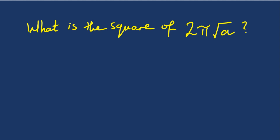Hello, so let's look at how to solve this particular question: What is the square of 2π√a? Okay, this is 2π times the square root of a, which means 2 times π times the square root of a.